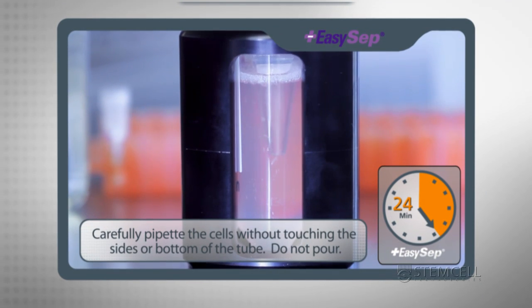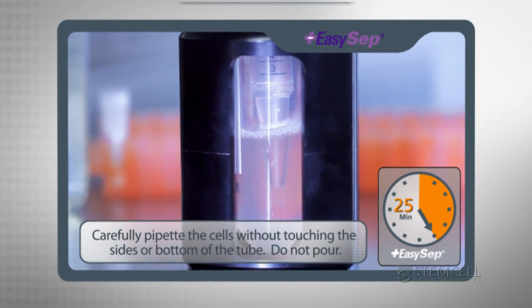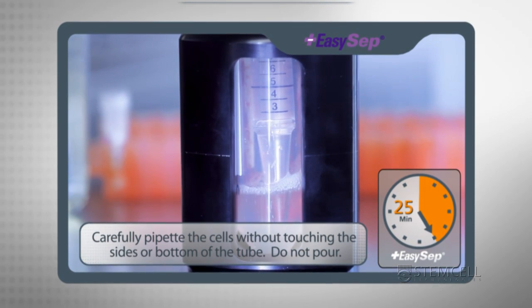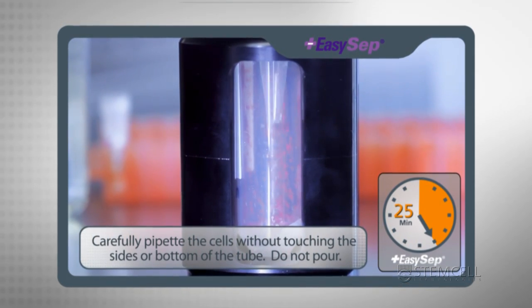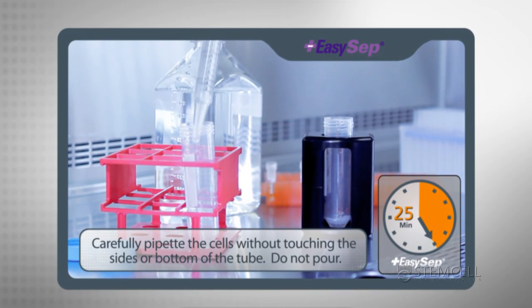Carefully pipette the desired untouched cells out of the magnet without touching the sides or bottom of the tube. Once these cells have been transferred to a new tube, they are ready for use in any downstream assay.